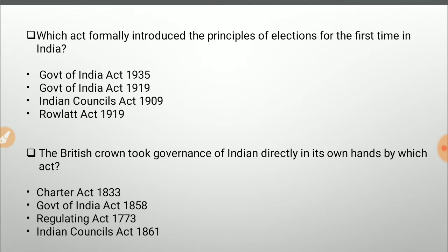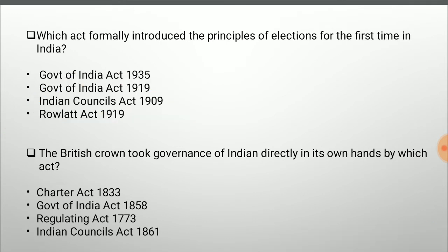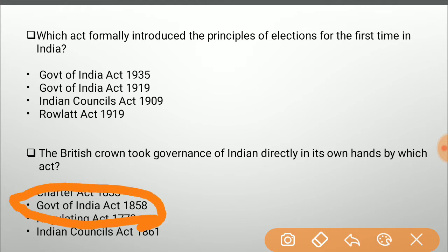Which act formally introduced the principle of election for the first time in India? Options are Government of India Act 1935, Government of India Act 1919, Indian Councils Act 1909, or Rowlatt Act 1919. The correct answer is the Indian Councils Act 1909. Next: the British Crown took governance of India directly into its own hands by which act? Options are Charter Act 1833, Government of India Act 1858, Regulating Act of 1773, or Indian Councils Act 1861. The correct answer is the Government of India Act 1858.